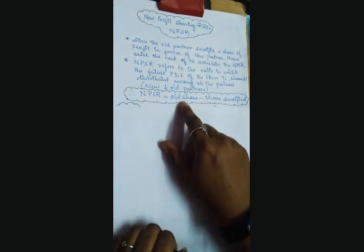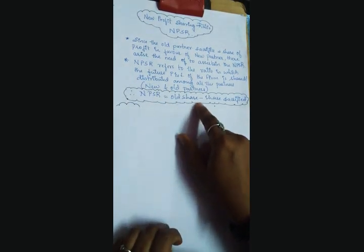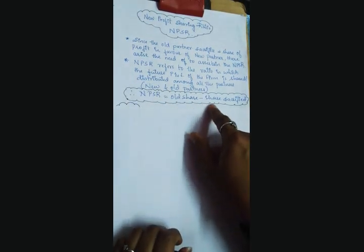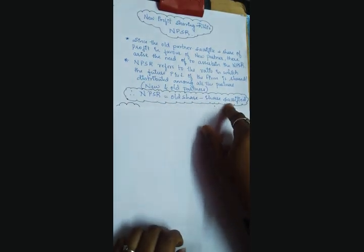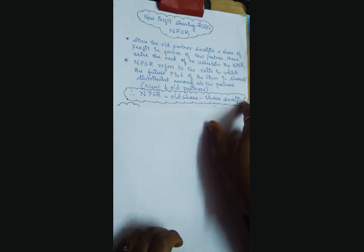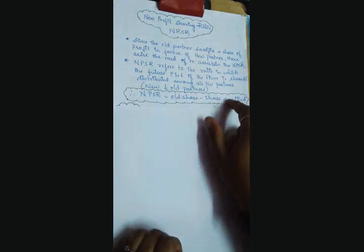NPSR is equal to old ratio minus share sacrificed. This is the formula.